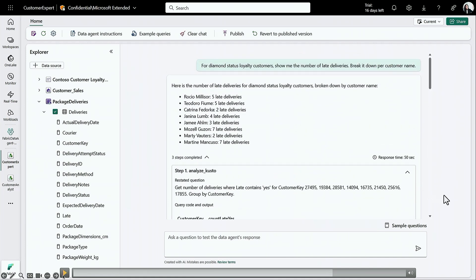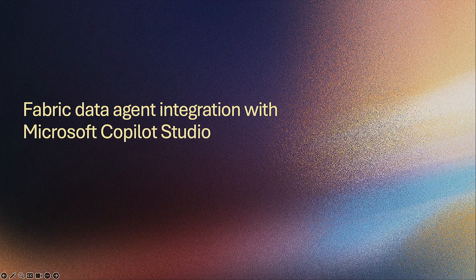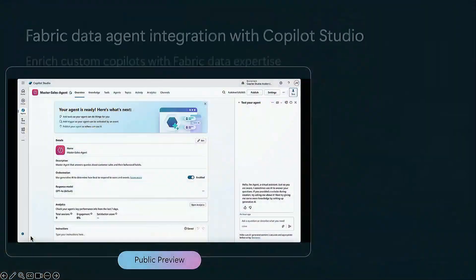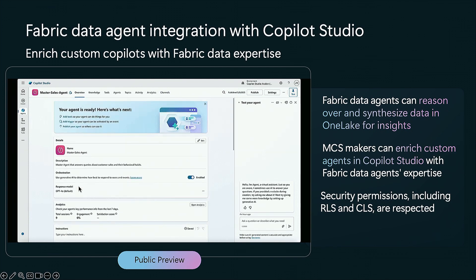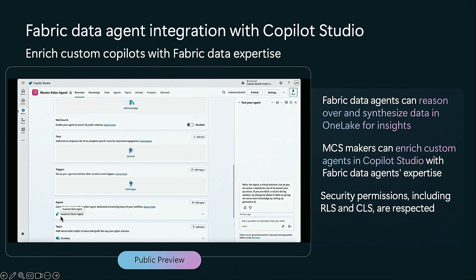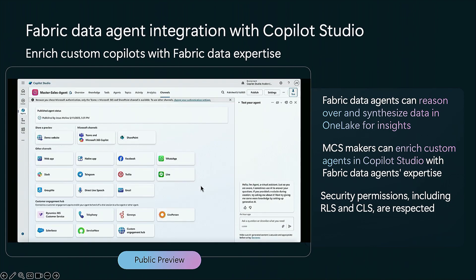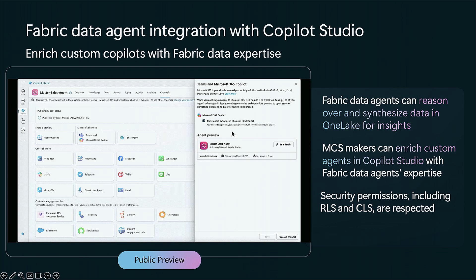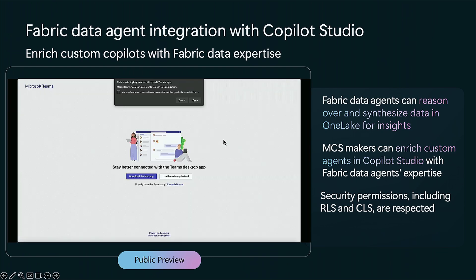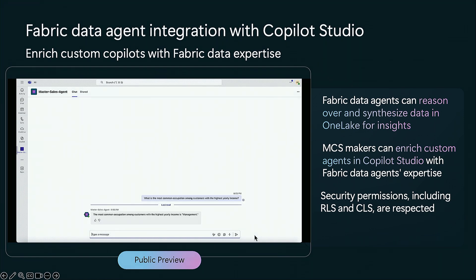Now let's talk about some of our integrations. In this conference, you've heard a lot about Microsoft Copilot Studio, and we're very happy that you can now integrate Fabric Data Agent with Microsoft Copilot Studio. In Copilot Studio, you can build custom agents and publish them to different consumption channels — from Teams to your own web app. You can build connected agents, bringing your Fabric data agent into Copilot Studio for grounded responses in your organizational data. We also respect all security access that lives in Fabric as well as in Copilot Studio.